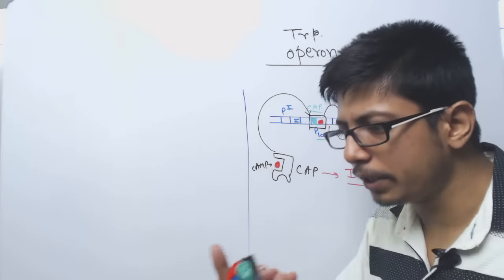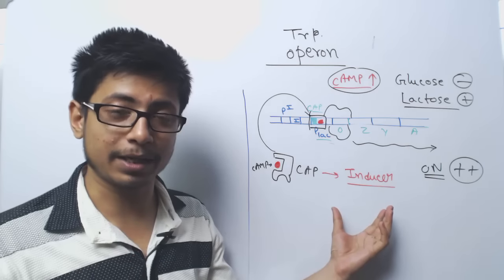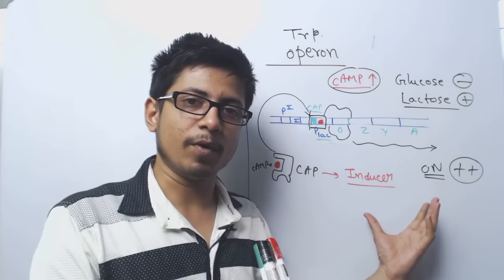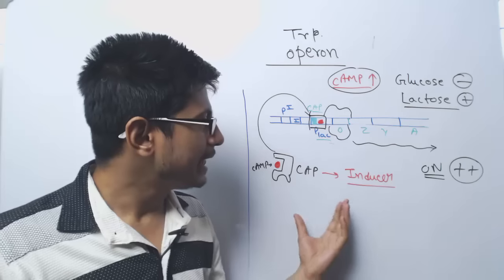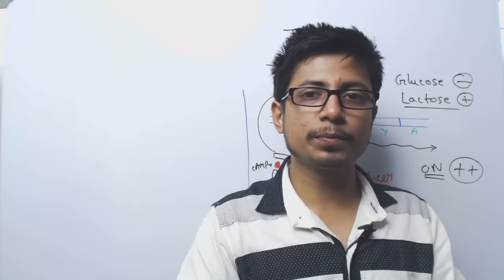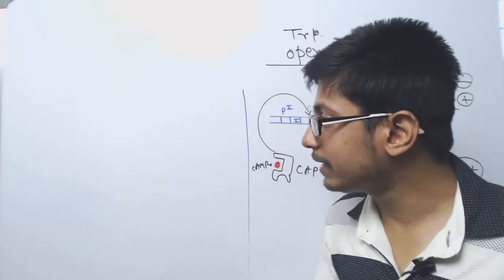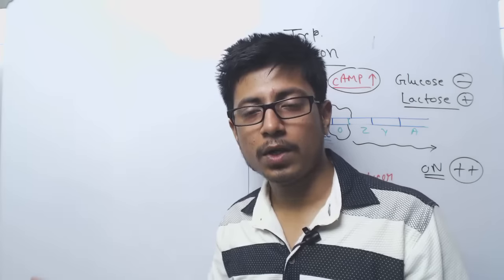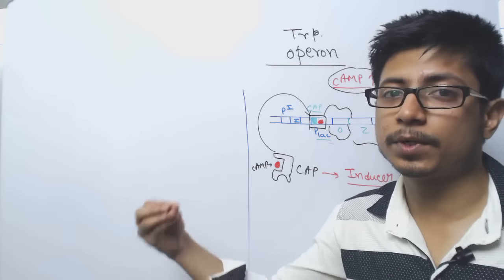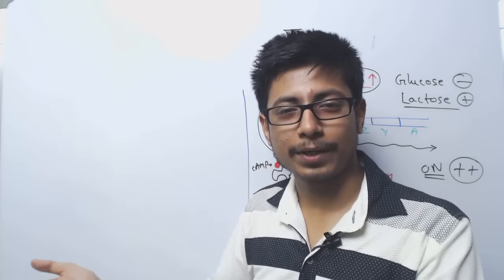This is a type of anabolic operon pathway. In contrast, the lactose operon is a catabolic type of operon — the lac operon produces proteins that break down lactose to generate energy. The tryptophan operon is anabolic, meaning many different proteins and enzymes are required to synthesize tryptophan inside the cell.